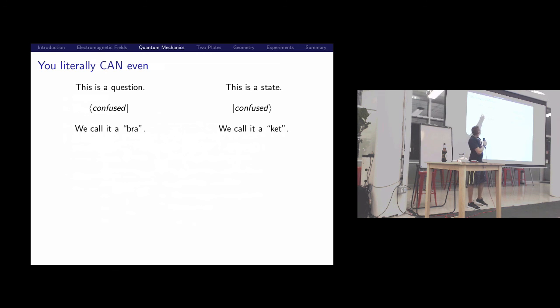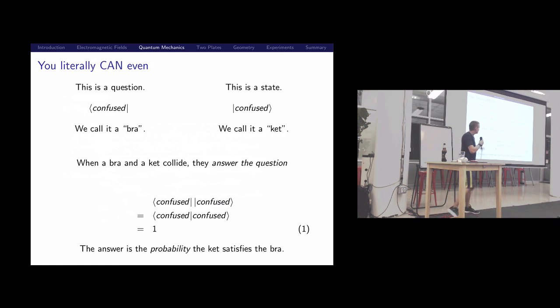This is called a bra. It has a little angle bracket on one side and a little vertical bar there. This is like a question. You can think of it like, hey, are you confused? And you all say yes. This over here, this is a ket, it's a state. This represents the state of someone who's confused. We use these states in physics for things like spin up, or a particle being at position two or position zero. Every different thing you could say about an object has a ket and a corresponding bra. Really, they're not questions and states, you could interpret them either way. They're two halves, like an interlocking puzzle piece.